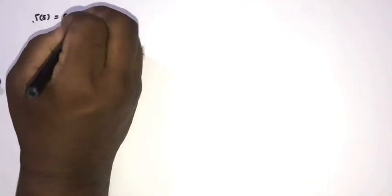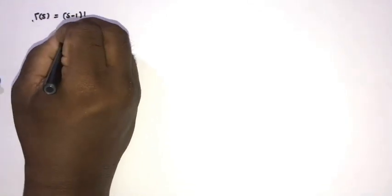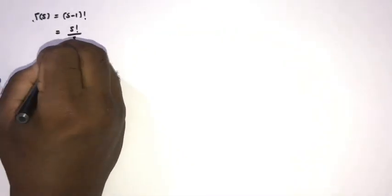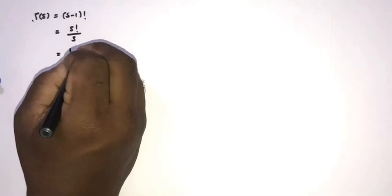For the second method, we also prove the Gauss representation of the gamma function. We begin with gamma of s, using the factorial definition: gamma of s equals (s-1)! which we can write as s! over s.